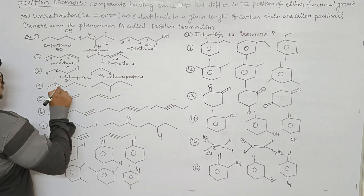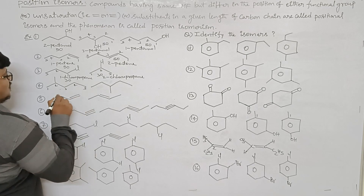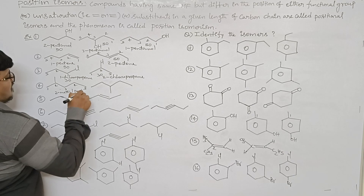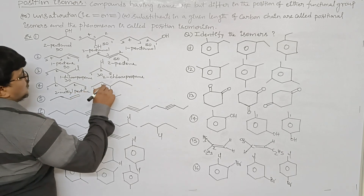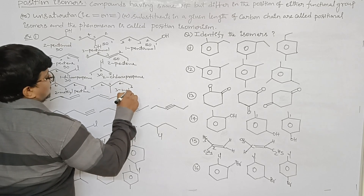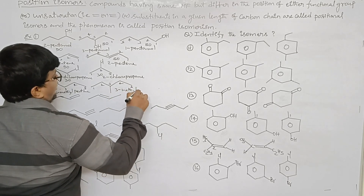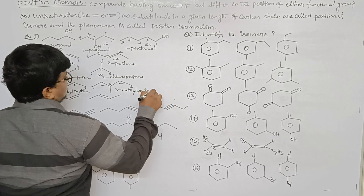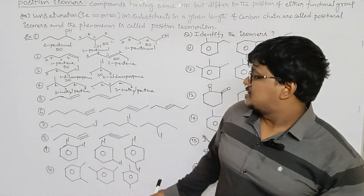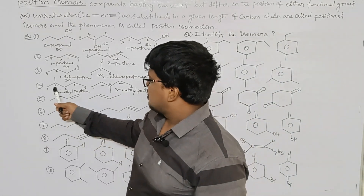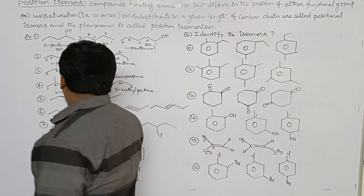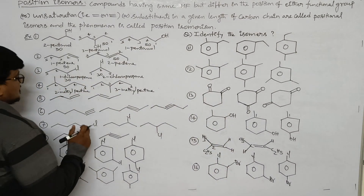The fourth example: the first compound has 5 carbons in the main chain and is named 2-methylpentane. The second compound is named 3-methylpentane. Both have the same parent chain, but the methyl substituent is at the second position in the first compound and the third position in the second compound. So both are positional isomers.